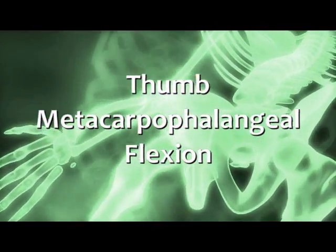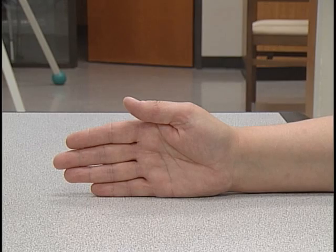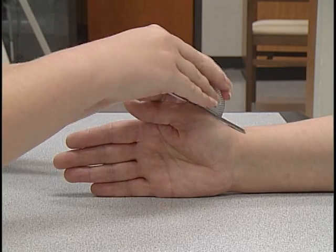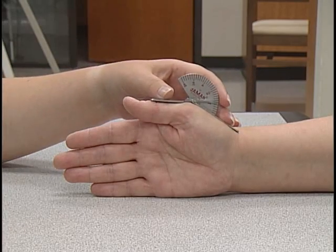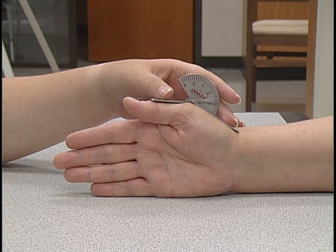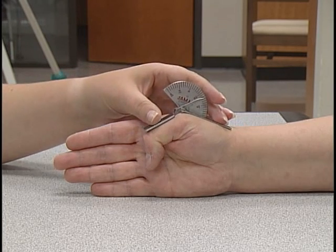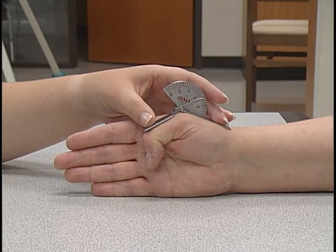For thumb MP flexion, the subject is seated with the forearm in 45 degrees of supination, the wrist at zero degrees neutral, and the forearm and hand supported on a firm surface. The axis of the goniometer is on the dorsal surface of the MP joint. The stationary bar is over the thumb metacarpal and the movable bar is over the proximal phalanx. The client's thumb distal of the MP joint is flexed down. The measurement begins at zero degrees and can range up to 50 degrees.